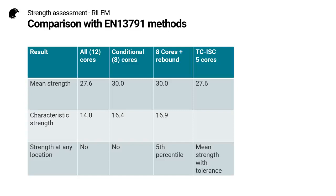If I compare the results with the methods we've used earlier in this series, you will see that with the five cores, I've obtained the same mean strength as I did using all 12 cores in the EN 13791 method. And in addition to that, I have the strength at any location in the test region with a guaranteed tolerance.